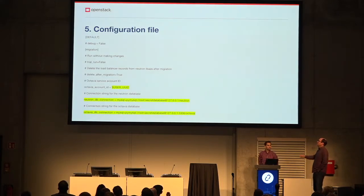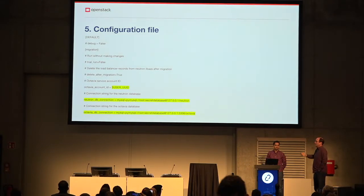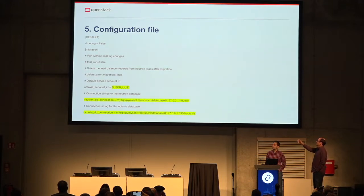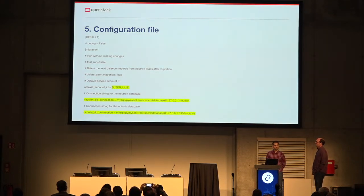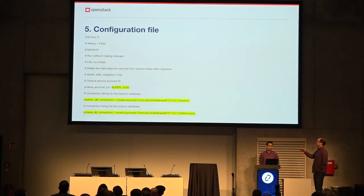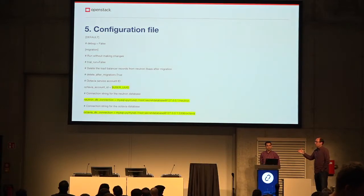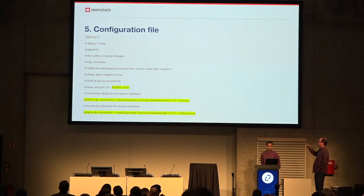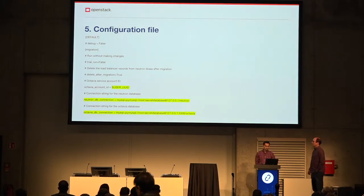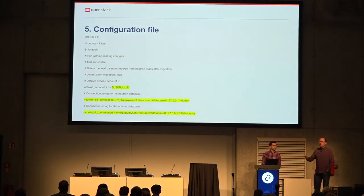Looking at the configuration file: in the directory where you find the tool there's also a sample configuration file. You need to put in the user ID for the Octavia account, which is the user ID of the Octavia service account, and then the database connection strings for both Neutron and Octavia. The Neutron one you find in /etc/neutron/neutron.conf, and the Octavia one in /etc/octavia/octavia.conf. In many installations there will be specific database users per service, so you may need to copy different connection strings.